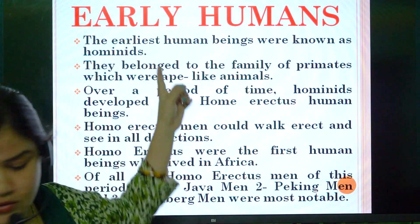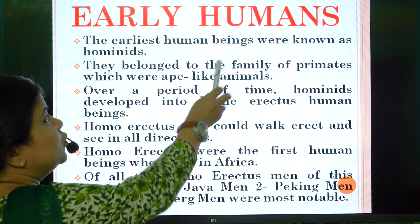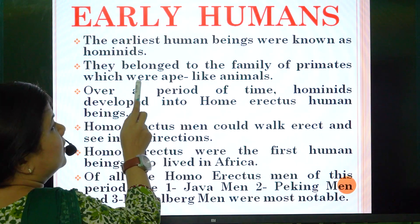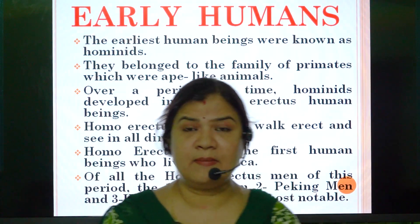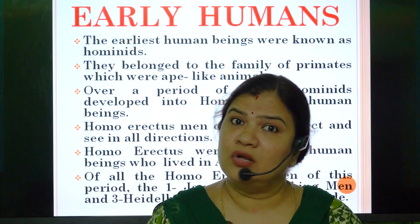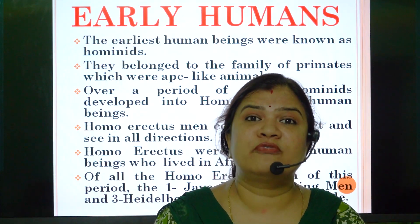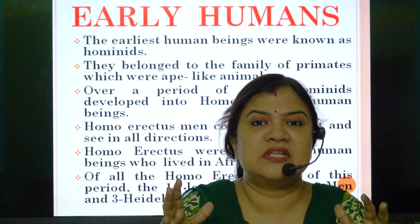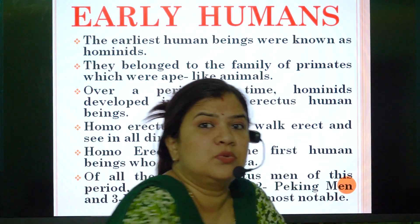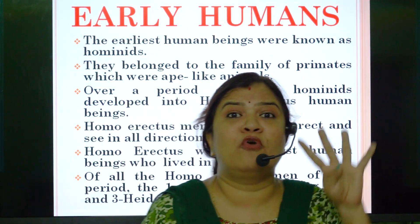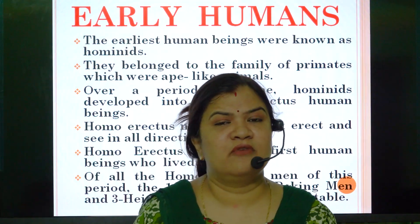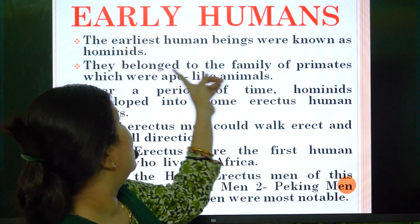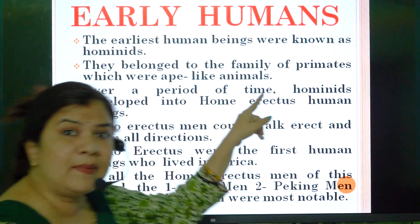The earliest human beings were known as Hominids. They belonged to the family of primates, which were ape-like animals. When early man came into existence, he did not look like us — he resembled more of an ape, somewhat like a chimpanzee. He was more bent forward and used to walk on four limbs — two hands and legs.